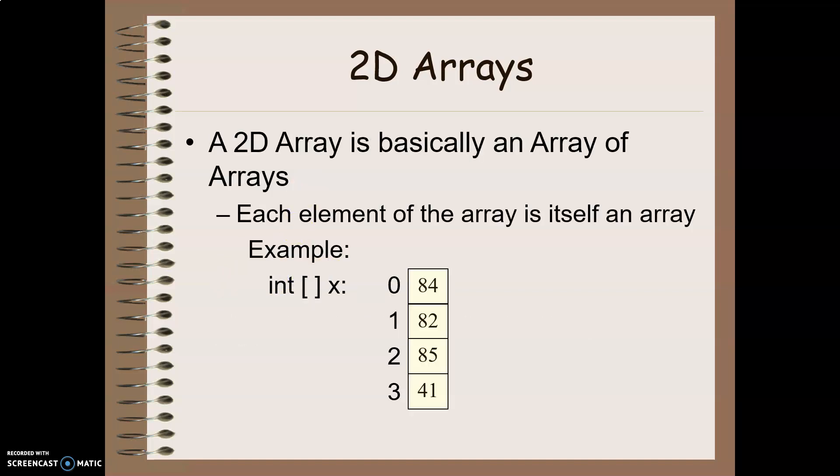A two-dimensional array is basically an array of arrays. What I mean by that is that each element in the array is itself an entire array. So what does that mean? Let's look at an example here. I've got a single-dimensional array called X. This is what we've seen in previous arrays. I've got positions zero, one, two, three. Each of those positions has a specific value. So that's one-dimensional arrays that we know.